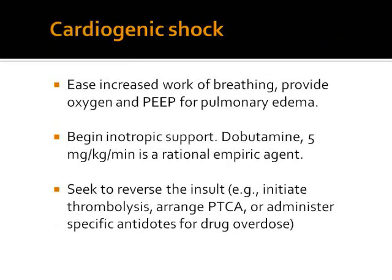Cardiogenic shock can occur in trauma as a result of chest trauma, or in patients with coronary artery disease. We must provide supplemental oxygen and positive end-expiratory pressure to reduce pulmonary edema, which means putting patients on a ventilator. Patients in cardiogenic shock require inotropic support — we can give dobutamine or dopamine. We must seek to treat the cause, usually coronary artery disease, and arrange for thrombolysis, percutaneous transluminal coronary angioplasty, or other indicated treatment.